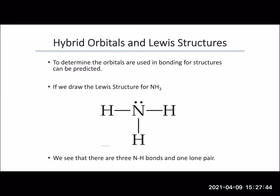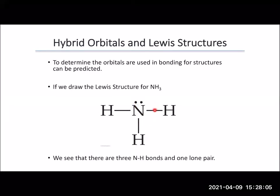Looking at these different orbitals and Lewis structures, we can determine the hybrid orbitals and what kind of bond is being formed. If we draw the Lewis structure for ammonia, NH3, we get nitrogen in the center with a single bond to each hydrogen and a lone pair on the nitrogen — three NH bonds and one lone pair. Since those NH bonds are single bonds, they're head-on overlapping, so each is a sigma bond.